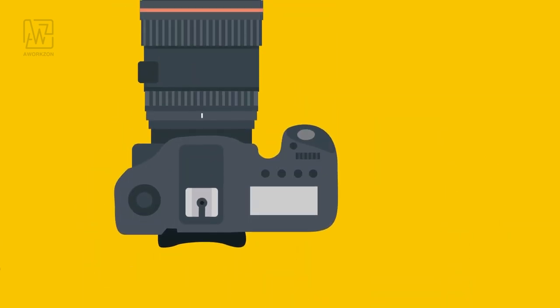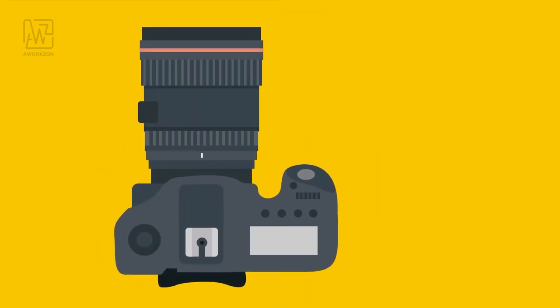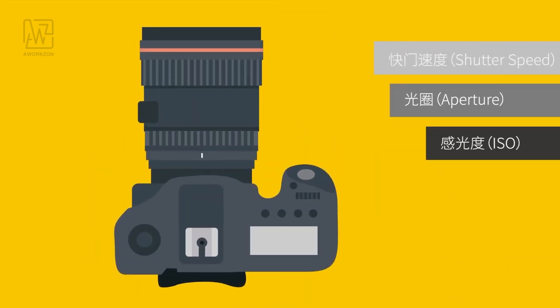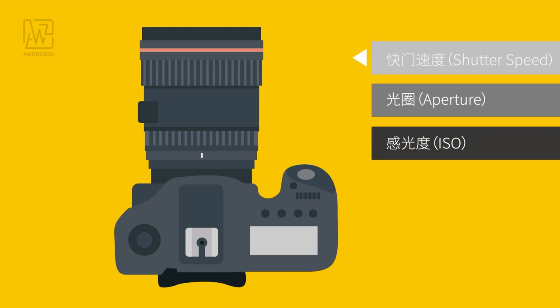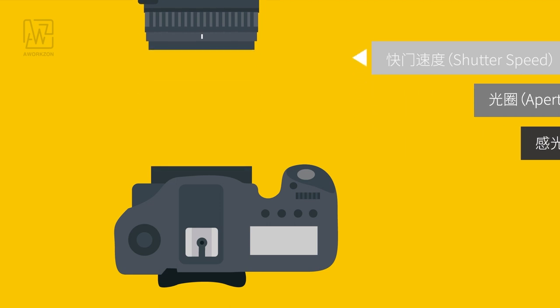Although we can see lots of settings and buttons all over various cameras, there are just three key settings: shutter speed, aperture, and ISO.